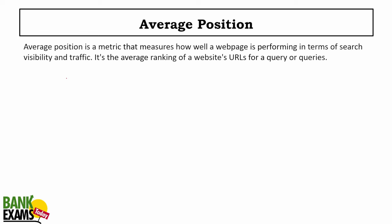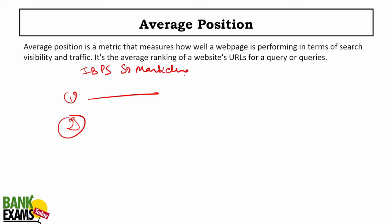Average position on Google: when you make a Google search for, say, IBPS SO marketing course, websites appear in ranked positions. If bankexamstudy.com appears in one of the top 10 positions, that is its average position on Google.